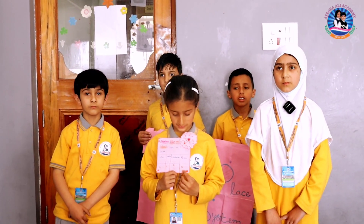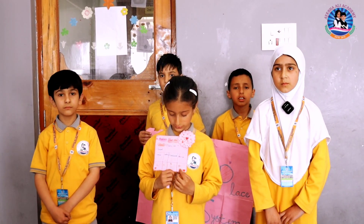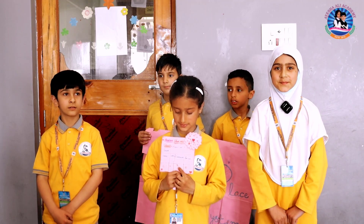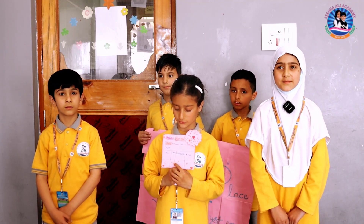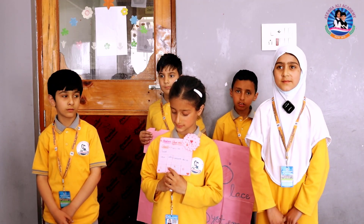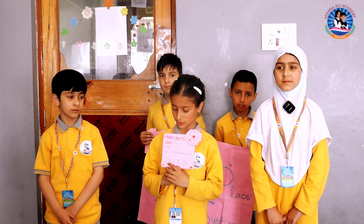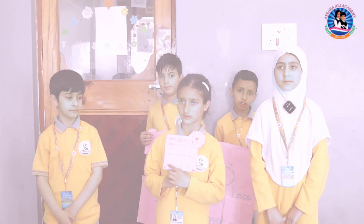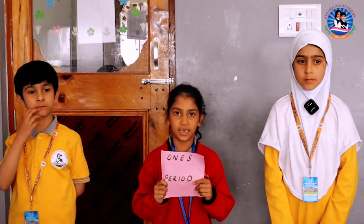The short form of one's is O, the short form of thousand's is TH, the short form of lakh's is L, and the short form of crore's is C.